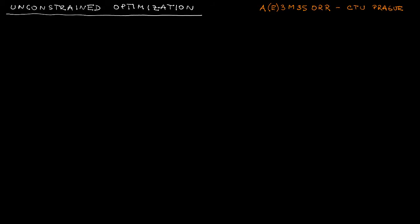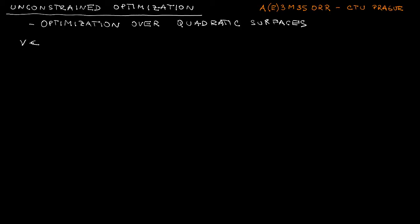Welcome to a continuation of our introduction to unconstrained optimization within a course on optimal and robust control at CTU in Prague. In this lecture we are going to investigate quadratic functions, restricting ourselves to functions of two real variables for ease of visualization, though all conclusions will be valid for general n-dimensional vector spaces.